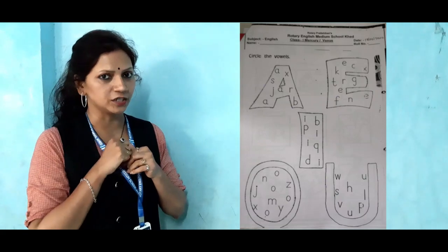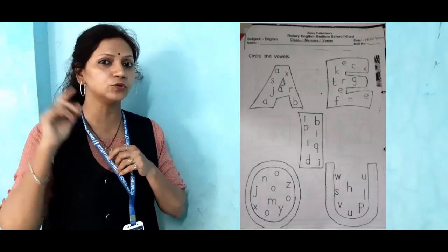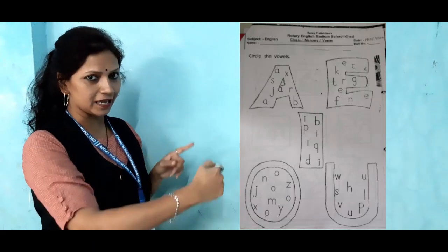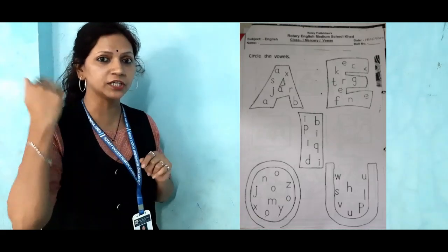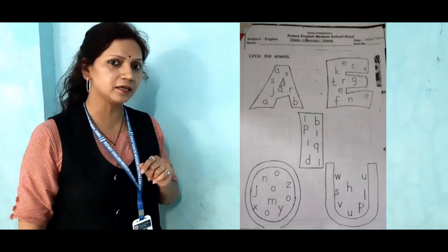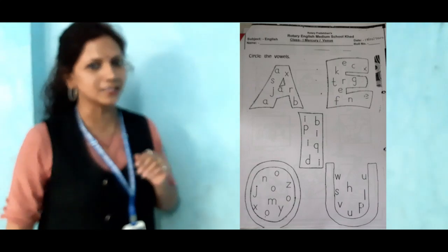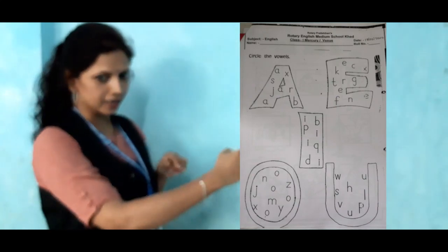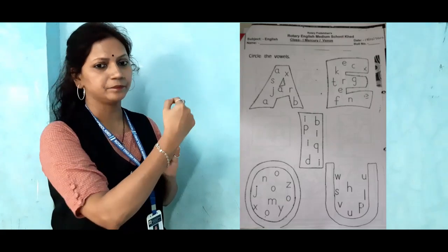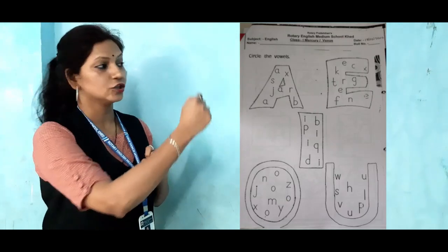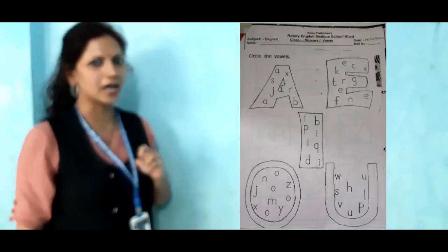Now let me ask a question for Shark. Are you present? Now just tell me, in A, how many vowels are there? Come on Shark, reply me. Shark is giving the answer. So in A, there are vowels: A, A, A. So circle A, A, A. Very good Shark.